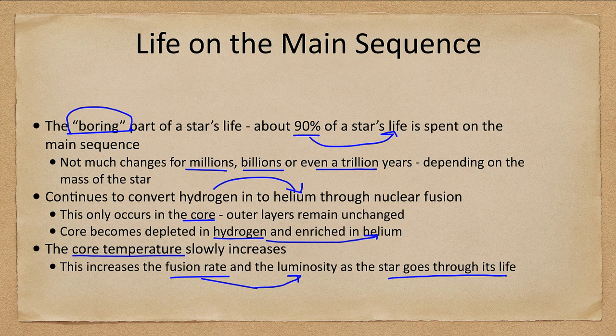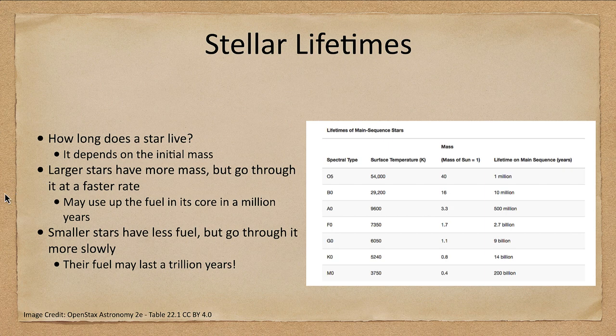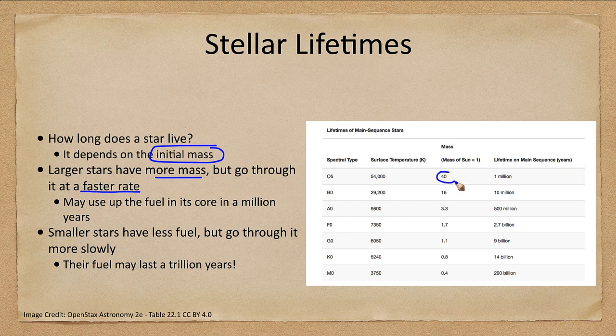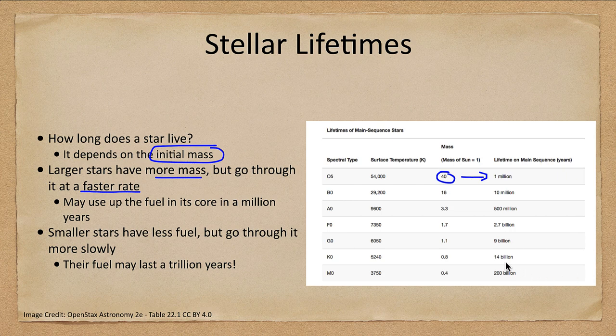Now how long is that lifetime? Well it really depends on the star, and in fact it depends on the initial mass of the star. Larger stars have more mass but go through it at a faster rate. So a star 40 times the mass of the Sun may only live a million years on the main sequence, even though it has 40 times the amount of fuel. It burns through it much faster.